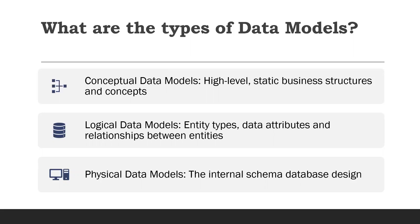Physical data models provide a schema for how the data will be physically stored within a database. They are the least abstract of all, offering a finalized design that can be implemented as a relational database, including associative tables that illustrate the relationships among entities, as well as primary keys and foreign keys that will be used to maintain those relationships. Physical data models can also include database management system-specific properties including performance tuning.